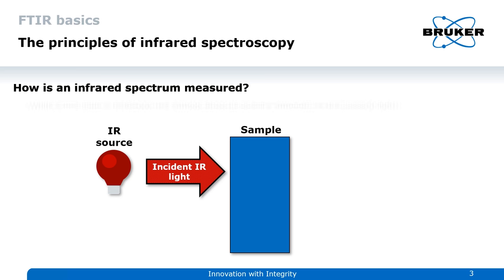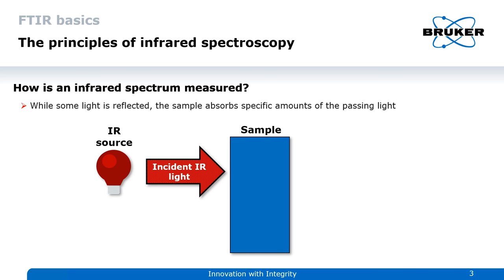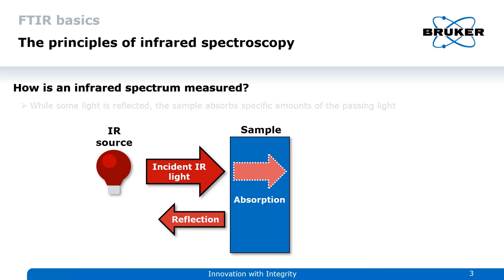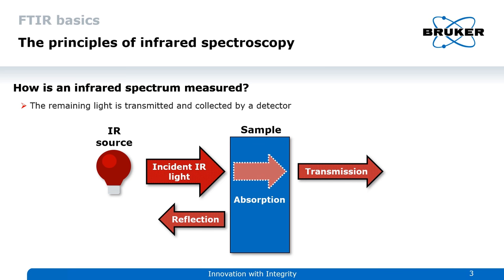Some light is going to be reflected, but a larger fraction will travel through the sample and specific parts of it are going to be absorbed by the sample material. The part of the light that is transmitted and carries the molecular information of the sample can then be collected by a detector to produce an electronic signal.